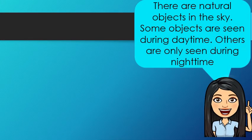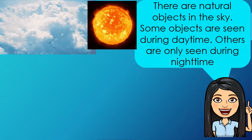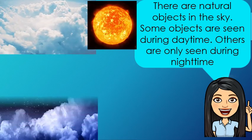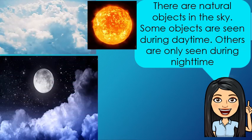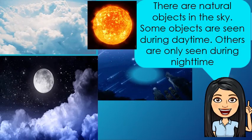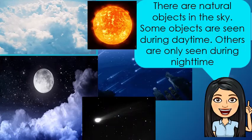There are natural objects in the sky. Some objects are seen during daytime, others are only seen during nighttime. During daytime, we see the clouds and sun. During nighttime, the moon is clearly visible together with the stars, clouds, meteors, comets, and planets.